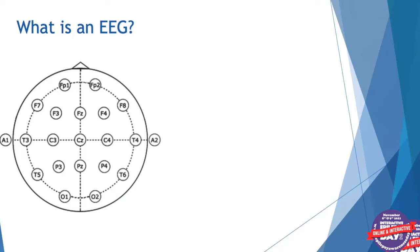The letters stand for different locations: FP stands for frontal polar, F is for frontal, C is for central, P is parietal, O is occipital, T is temporal — those are the various regions of the brain, anatomically speaking.